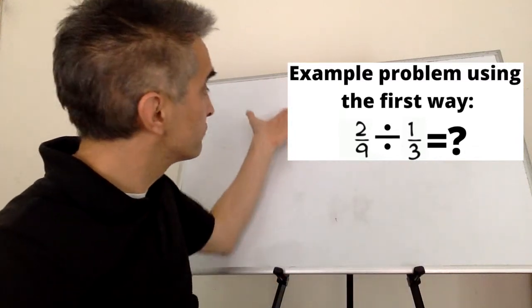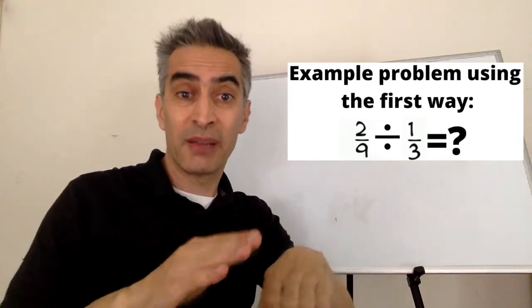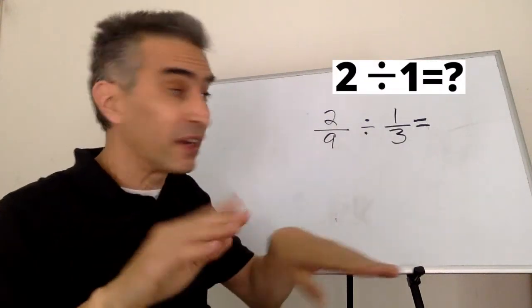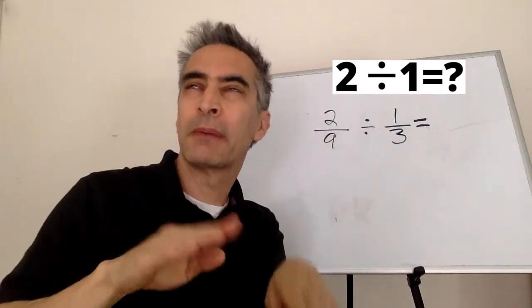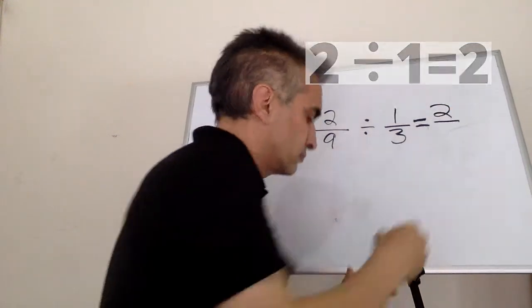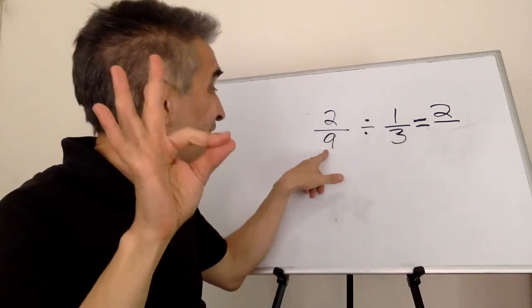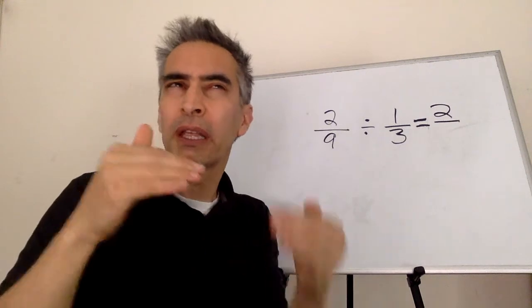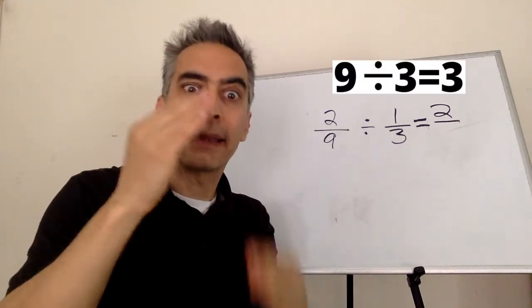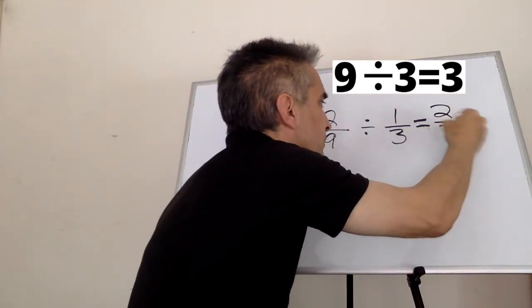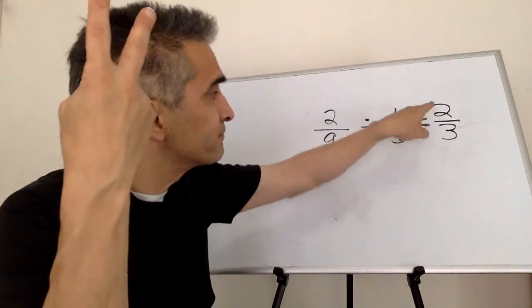Our example problem using the first way is 2 ninths divided by 1 third. What do we do? This 2 divided by this 1 equals 2. Next, 9 divided by 3 equals 3. The answer is 2 thirds.